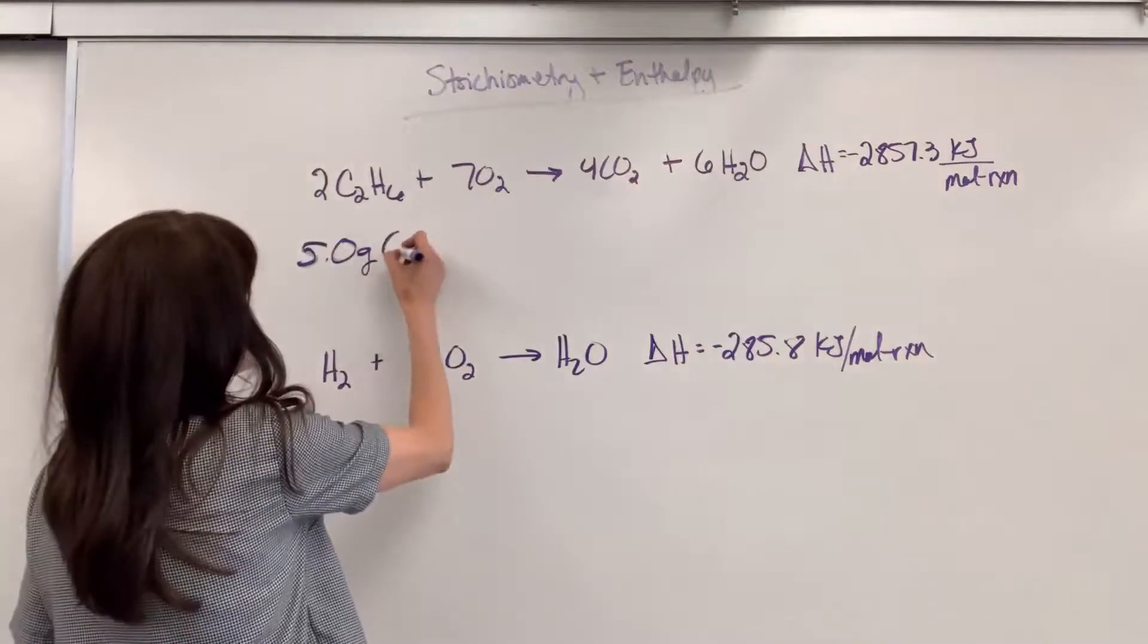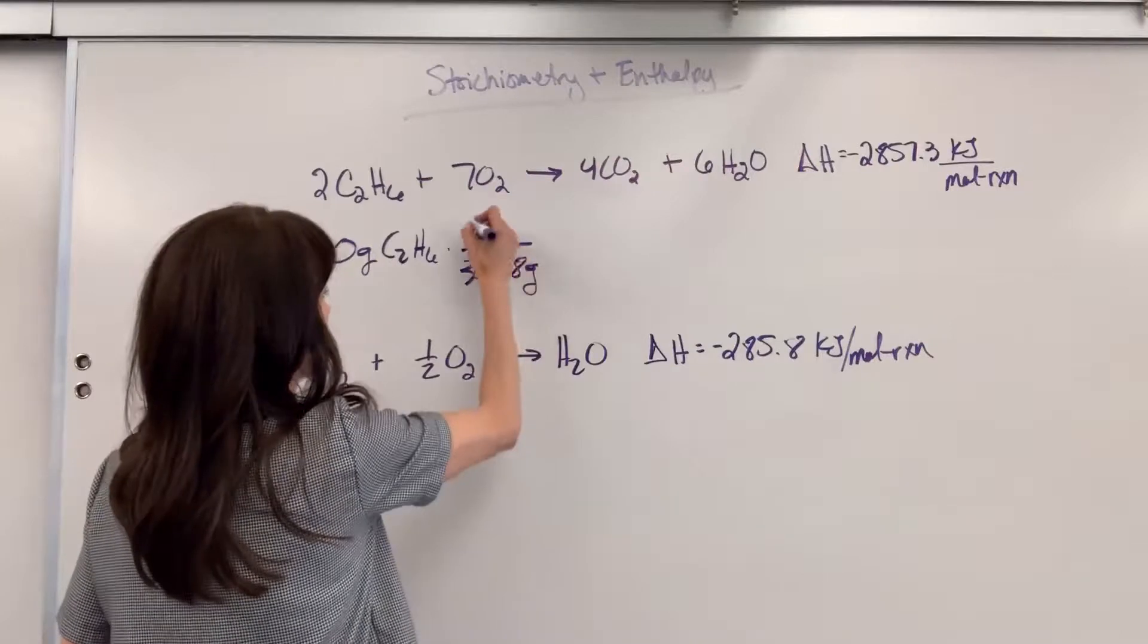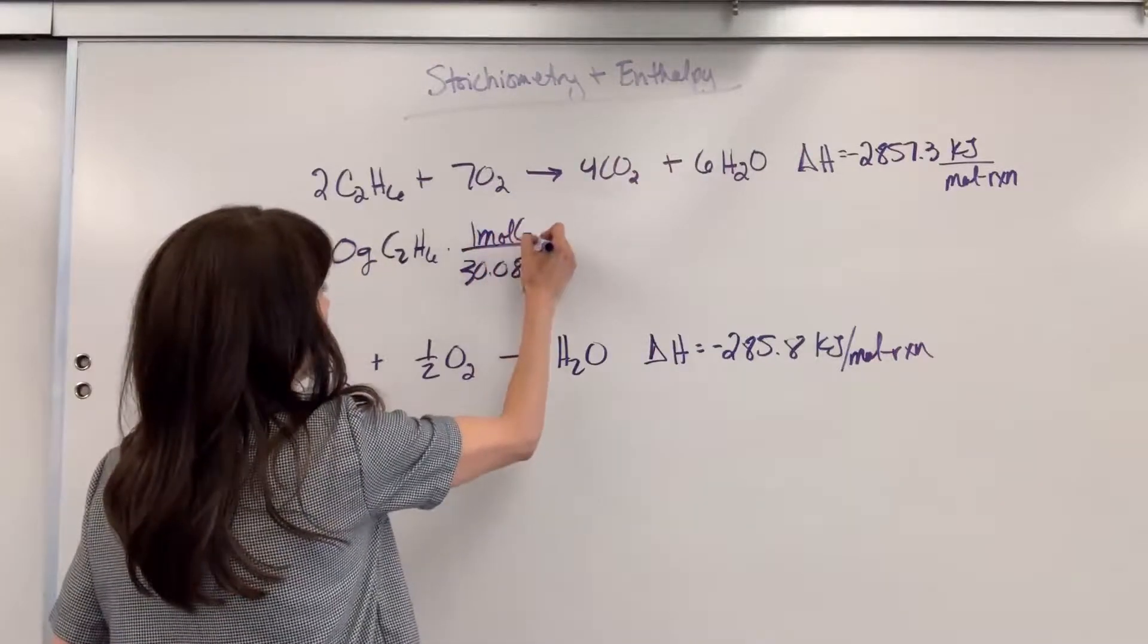So let's bring this to moles. We've got C2H6. Molar mass on this is going to be 30.08 grams for every mole of ethane.